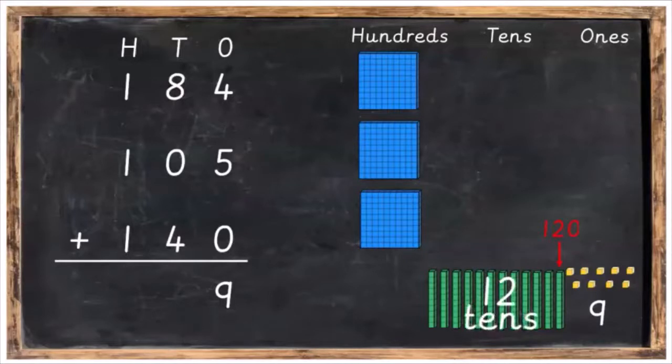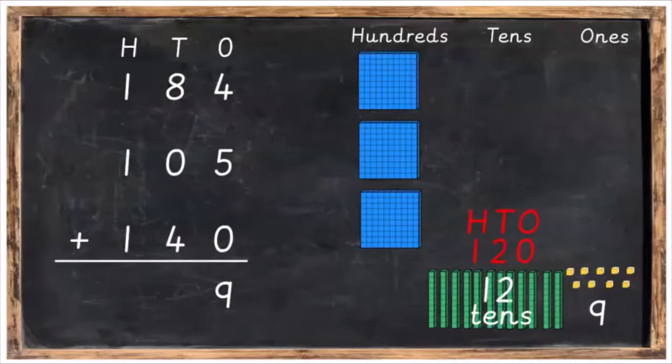So these 12 tens here are actually equal to 120. And 120 has 100 in it, two tens in it, and zero ones in it. And we can split those up into the hundreds, tens and ones, just like this.